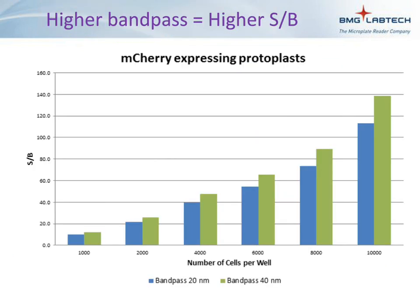We have recently shown that a larger bandpass improved signal-to-blank ratio in a fluorescence intensity test. The results show mCherry expression at varying cell numbers. All tests were performed with the ClarioStar with a change in the bandpass of the emission settings for comparison. Using the 40-nanometer bandpass improves the signal-to-blank ratio at all cell numbers — the improvement is about 20% — and with lower signal from lower cell number or lower expression, this difference would become extremely important.